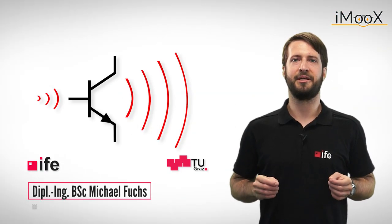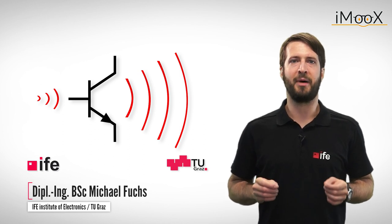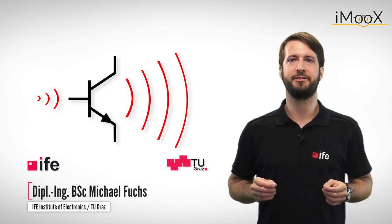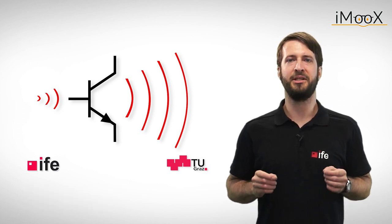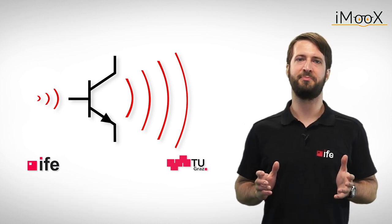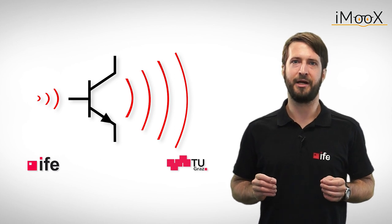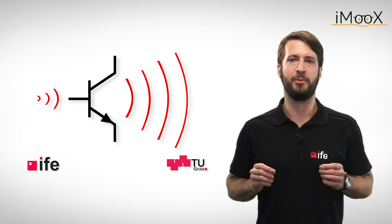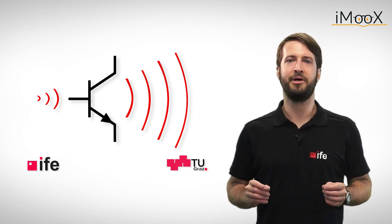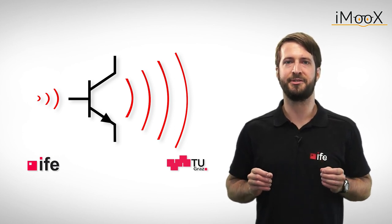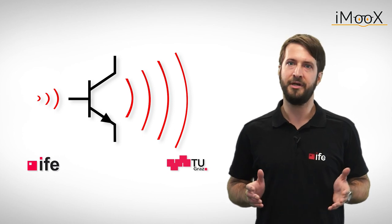In our last video we looked at the basic functionality of a bipolar transistor and explained a short design example of an AC coupled emitter follower. But if we want to fully understand the complex behavior of transistor amplifiers, we have to go a little bit more into detail. So stay tuned as we go a level deeper and address the limitations of transistor amplifiers and find out how to cope with them.